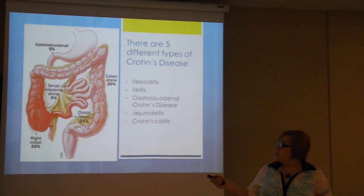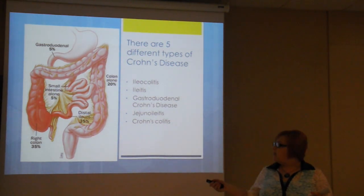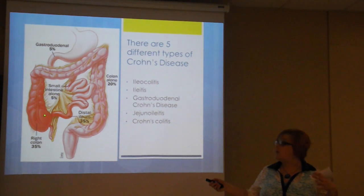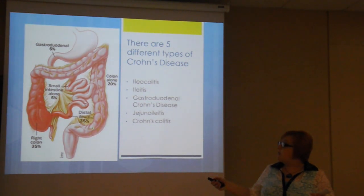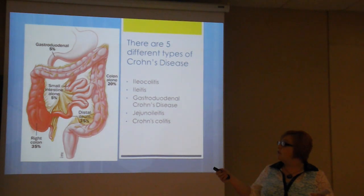Here's a great image that shows the percentage of people that have each type of Crohn's. About 35% have Iliocolitis in the right colon, and Iliitis is equally common at about 35%. About 20% of Crohn's patients have it just in the colon alone, and a very small percentage have it up in the small intestine, duodenum, and gastroduodenal area.